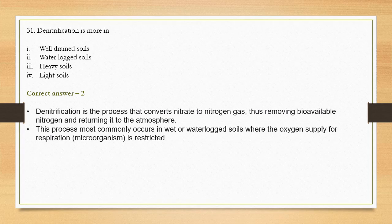Denitrification is the process that converts nitrate to nitrogen gas, thus removing bioavailable nitrogen and returning it to the atmosphere. Plants need nitrogen, and in the atmosphere nitrogen gas is reduced to ammonia via nitrite or nitrate so that it can easily be assimilated by plants.